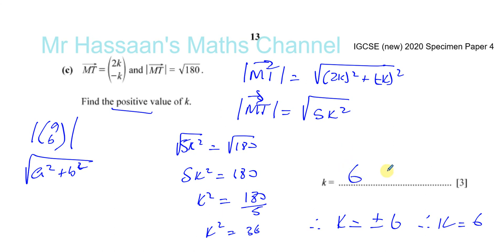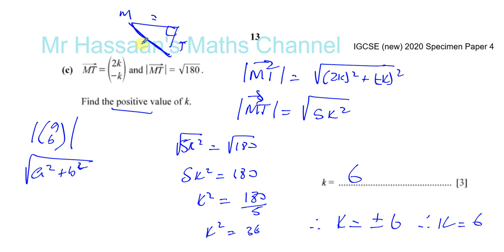We want the positive value, so k = 6. Only write the positive value in your final answer — if you write ±6, you will lose marks. Finding the magnitude of a vector uses Pythagoras: the two components are the shorter sides and the magnitude is the hypotenuse. So √(5k²) = √180 gives us k = 6, and that completes part C.